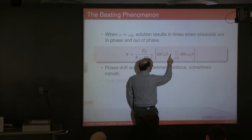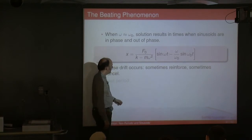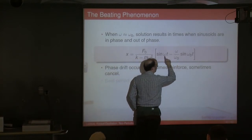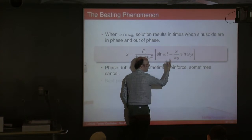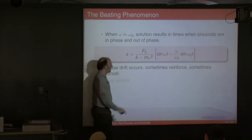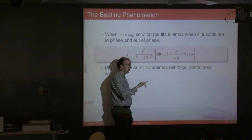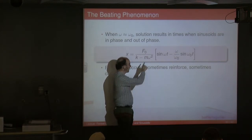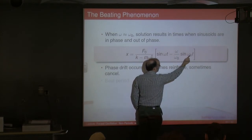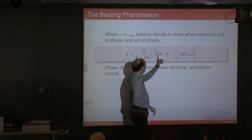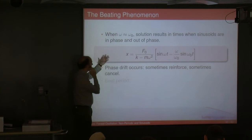Sometimes these frequencies are so close that those two terms will add together or subtract from one another — they reinforce when in phase and cancel when out of phase. Because the two frequencies are close together, you essentially get sine omega t minus sine omega_naught t alternating between zero and a maximum. And you get this phenomenon called beating.